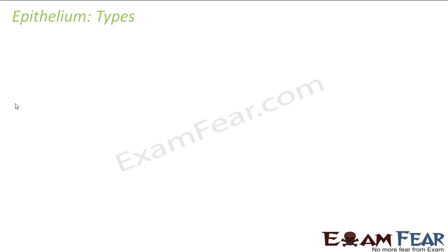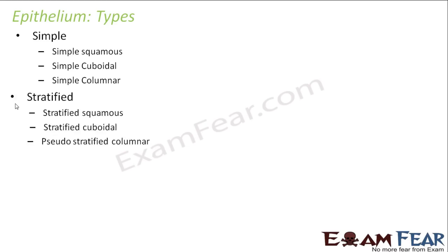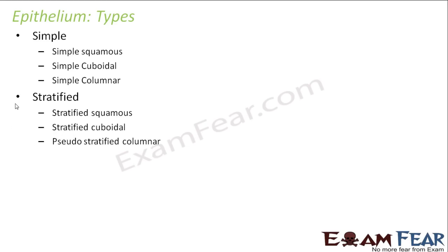There are various types of epithelial tissues which are present. How have we classified epithelial tissue? We have classified epithelial tissue based on the structure of the epithelial tissue. Broadly, epithelial tissue is classified into two types: simple epithelium and stratified epithelium. So these are the two main classifications of epithelial tissue.